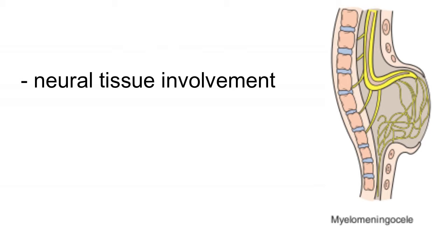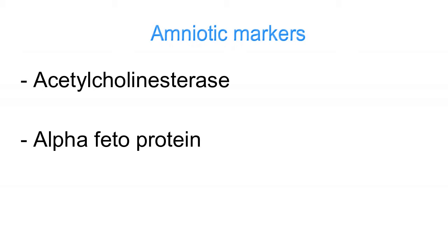The markers that we will be looking for are acetylcholinesterase and alpha-fetoprotein. These markers are originally present inside the neural tissue or nervous system, and once the neural tube is defected, they will be released into the amniotic fluid where we can measure them. However, these markers are not elevated in spina bifida occulta because the dura is intact and the neural tissue is preserved.